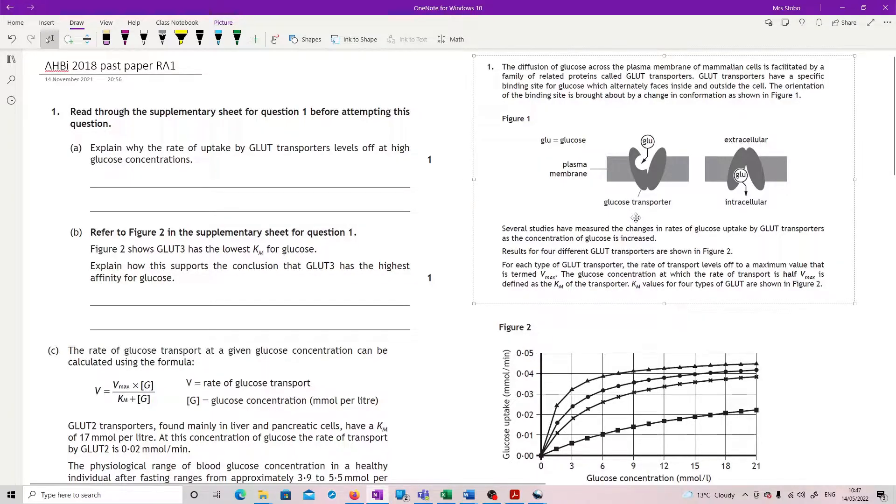across the plasma membrane of mammalian cells is facilitated by a family of related proteins called the GLUT transporters. GLUT transporters have a specific binding site for glucose which alternately faces inside and outside the cell. The orientation of the binding site is brought about by a change in conformation as shown in Figure 1.